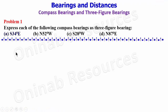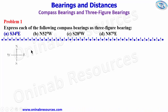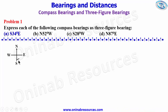We start the solution from A. For A, we are going to draw the sketch of south 34 degrees east. So we take a point, and for south 34 degrees, from south we are moving to the eastern direction by 34 degrees, so we have the angle 34 degrees.